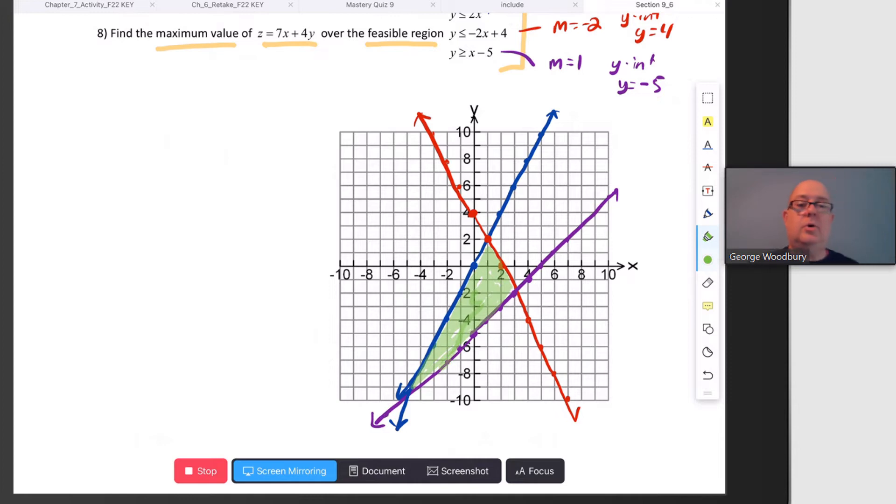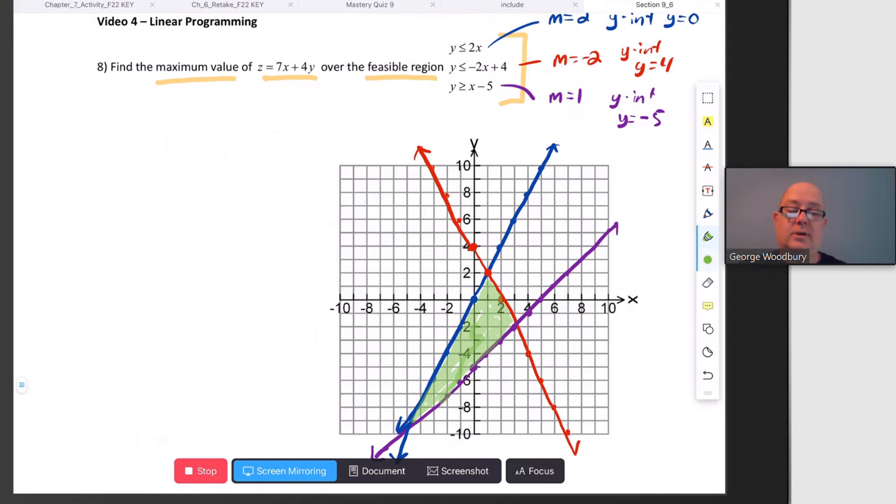The maximum over this entire region is going to occur at one of the three endpoints, the three intersection points. We know what those are from the graph, but I'm going to find them algebraically as well. I was careful with my graph. I know that it crosses here at (3, -2), up here at (1, 2), and down here at (-5, -10).